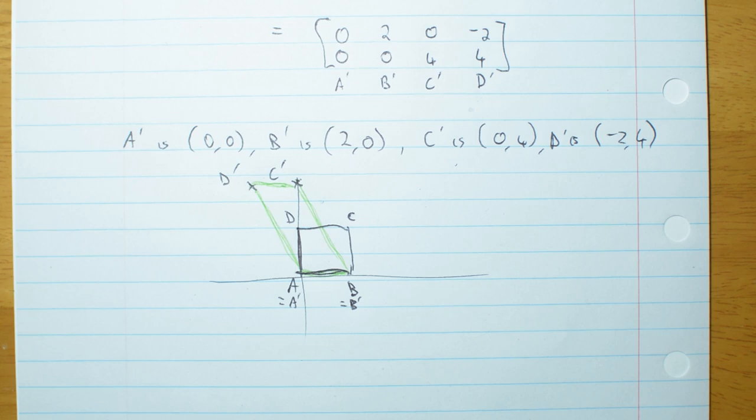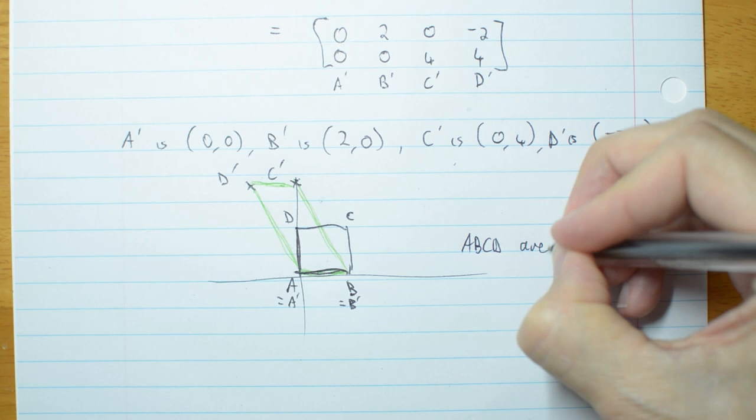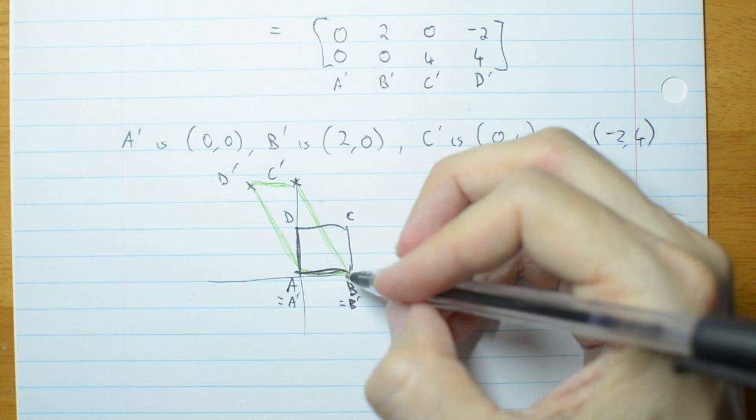Now I'm going to ask you a question that leads into something we look at later. What's the area of the original square? Well, ABCD area is obviously 2 times 2 is 4.